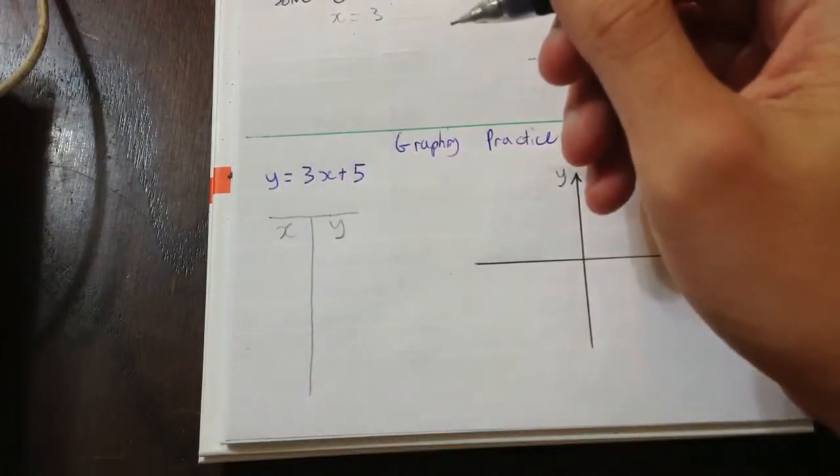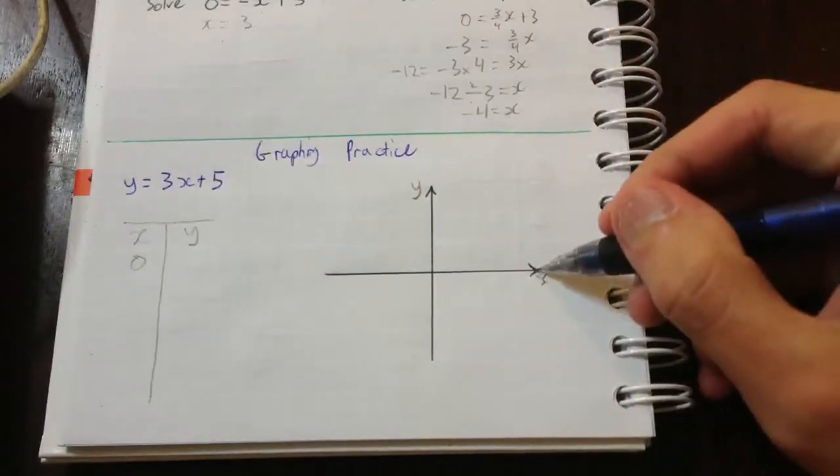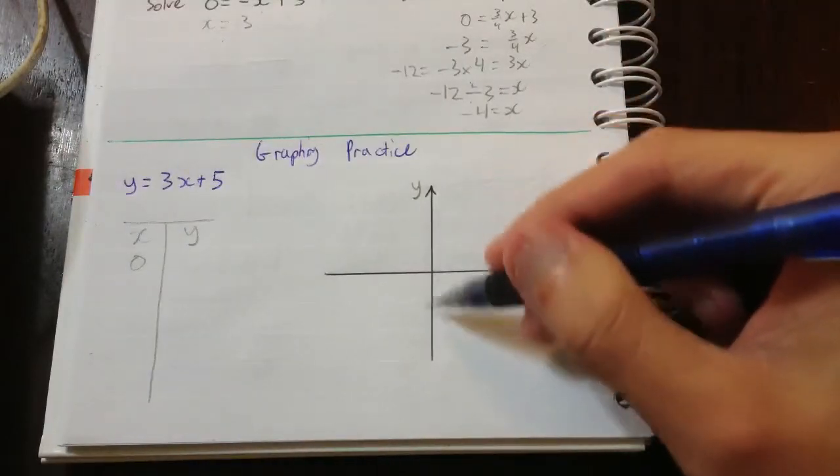And we just need a few important points. So, if x equals 0, that's a very important point, because when x equals 0, that's here. And it tells you how high we need to go.